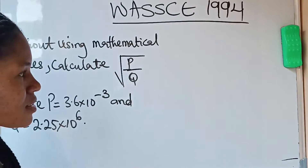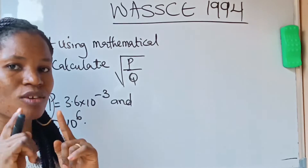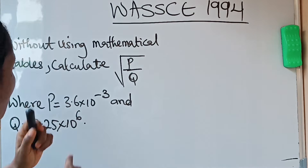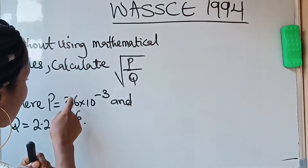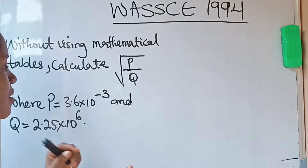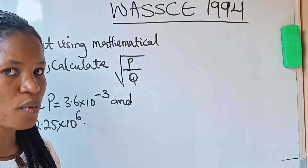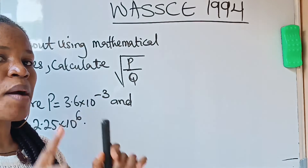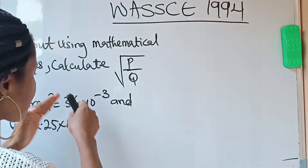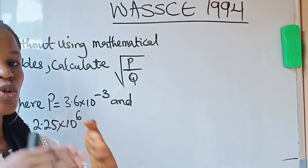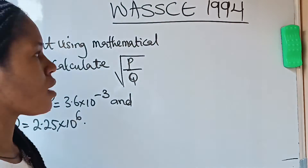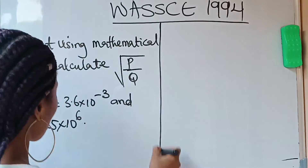When you are doing something like this, the first thing you should do is to ensure that you remove these decimal points. It's only by removing these decimal points that you can easily find their square roots. So that brings me to: how do we change this decimal to an ordinary number? Let's go ahead and do that.